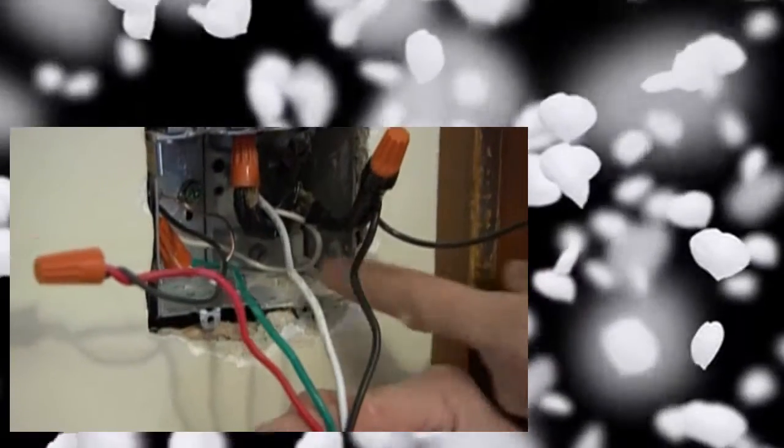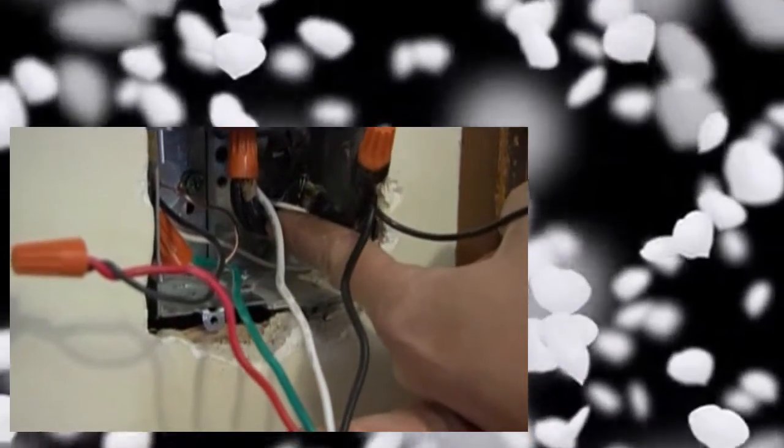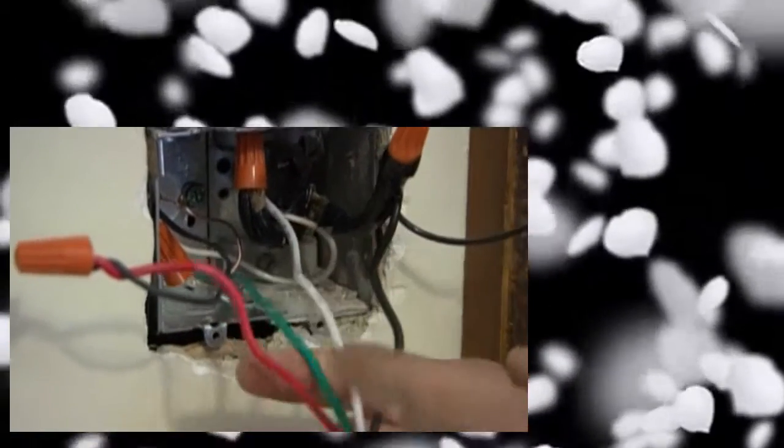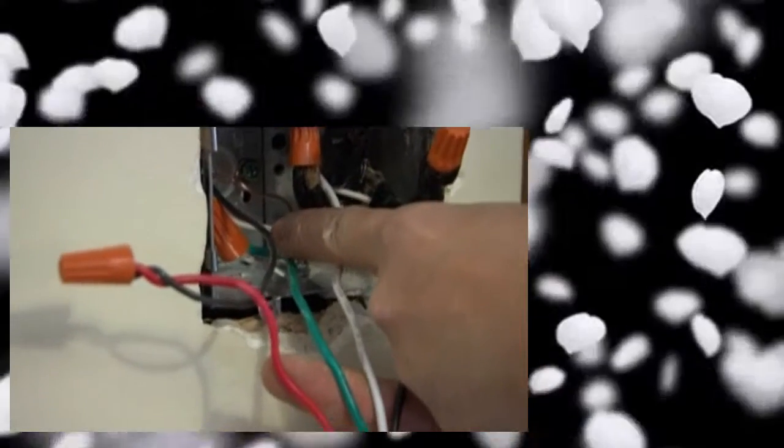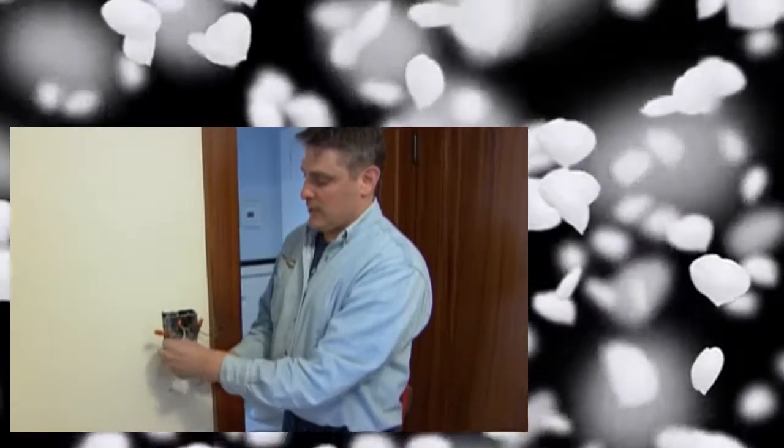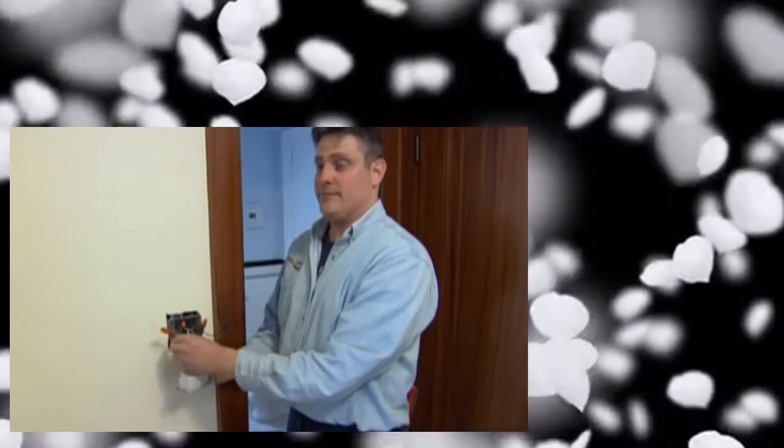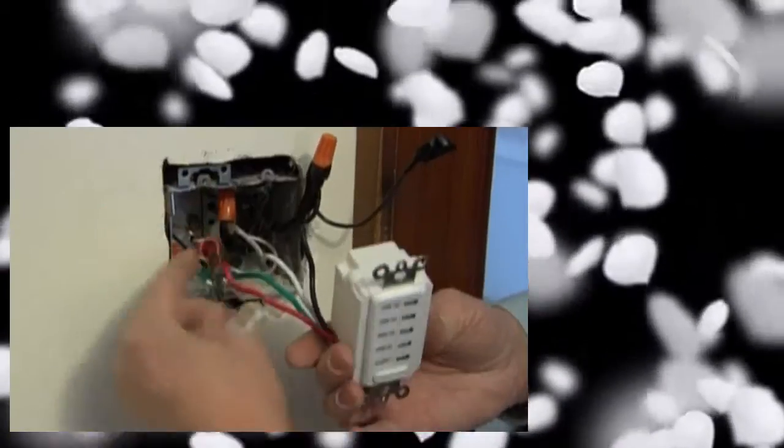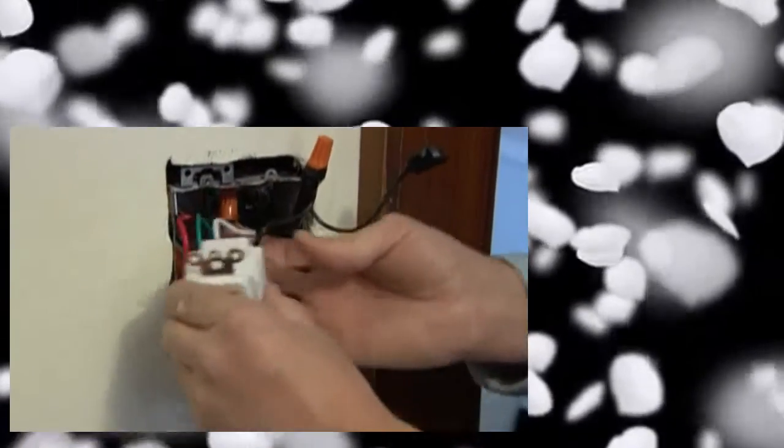We have a white wire which is connecting to the common neutral in the back of the box. And you have the green wire which is connecting to the ground wire we connected earlier to the box and a red wire which is going to your fan. Now I'll gently fold the wires back into the box and attach the switch to the wall.